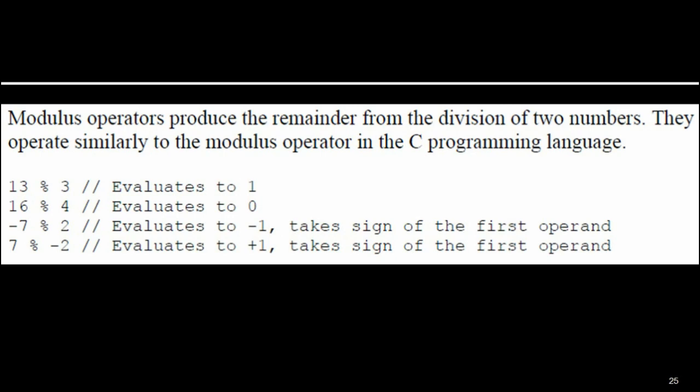The modulus operator works similarly to the modulus operator in C programming language. For example: 13 modulus 3 is 1; 12 modulus 4 is 0 (no remainder). Negative 7 modulus 2 evaluates to minus 1; 7 modulus negative 2 evaluates to plus 1. The result takes the sign of the first operand — that is an important point.